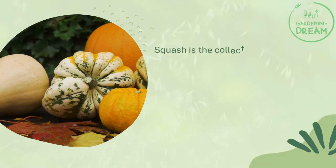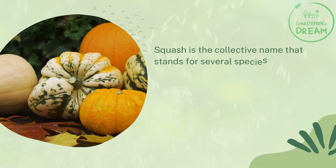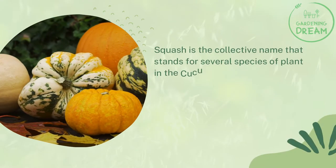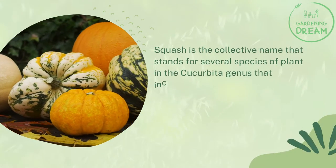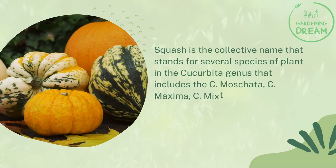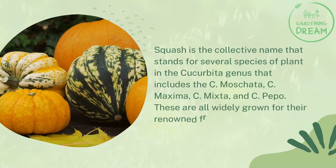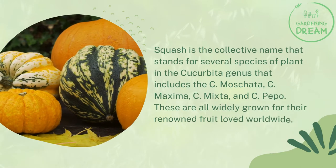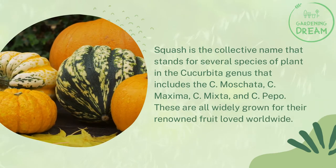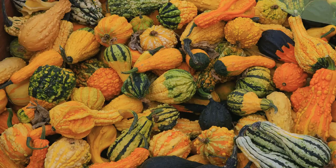Squash is the collective name that stands for several species of plant in the Cucurbita genus that includes C. muscata, C. maxima, C. mixta, and C. pepo. These are all widely grown for their renowned fruit loved worldwide.